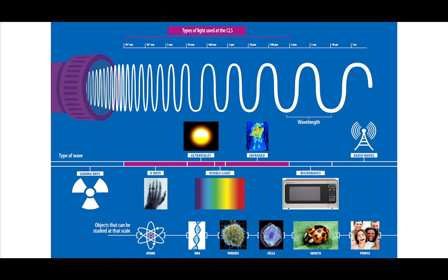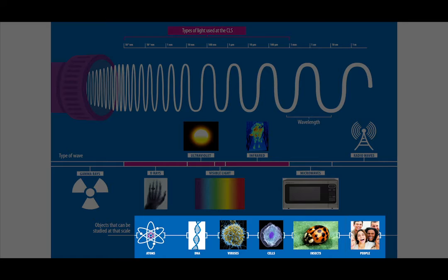As shown on the bottom of the poster, we can look at samples that range in size from atoms to people and many things in between, like DNA, viruses, cells, and insects, to that cow that's sitting above the infrared section.